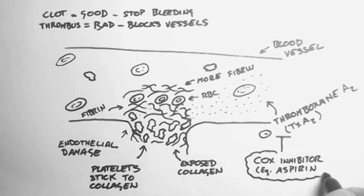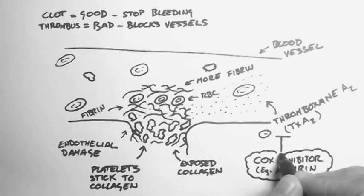And that blocks the thromboxane A2 production. And this means that the platelets won't stick together, and the clot won't be formed. In this way, you can actually stop thrombi forming. But a side effect is that you can also get excessive bleeding.